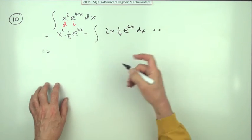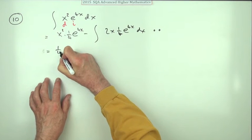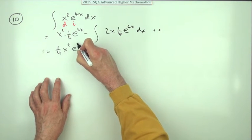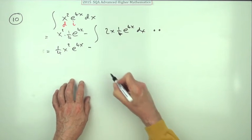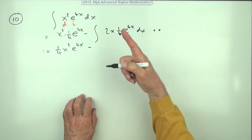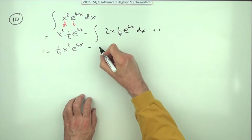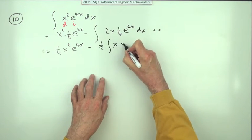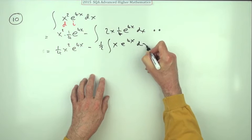So continuing with that then, that would be one quarter of x squared e to the 4x minus, now this part. Tidy it up first. I've got two times a quarter which is a half of x e to the 4x dx.